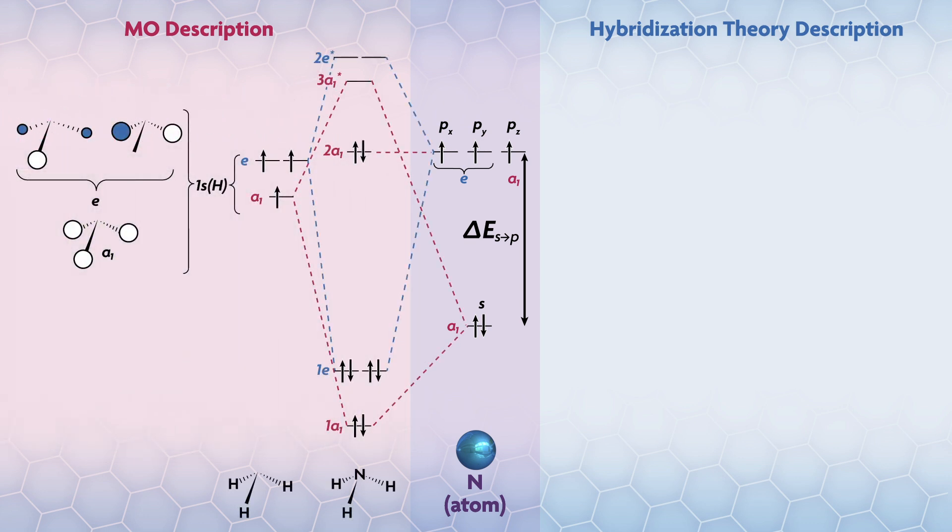What we found was that the symmetry adapted linear combinations of atomic orbitals for the hydrogen in ammonia have A1 and E symmetry, with the shapes and phases shown. If you look at the MO diagram, there is a three-orbital interaction with A1. There are two A1 orbitals on nitrogen and one A1 on hydrogen SALCs. If you don't have any other information, the recommendation is to create a bonding, non-bonding, and anti-bonding set of orbitals, which is what we've done in our diagram.